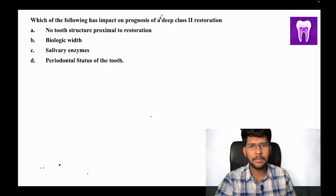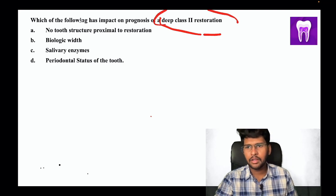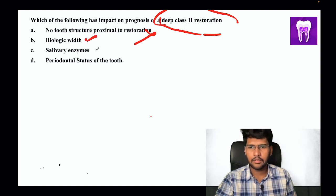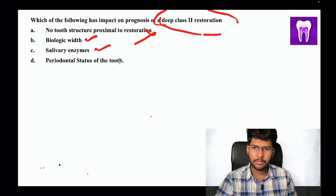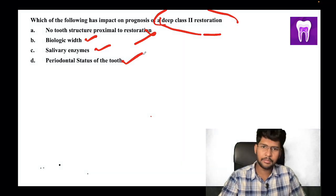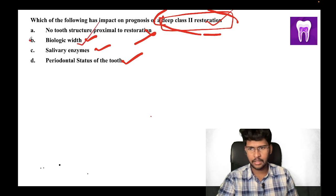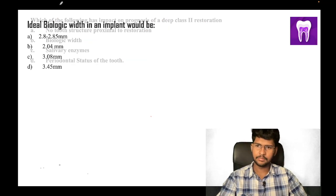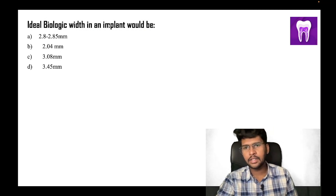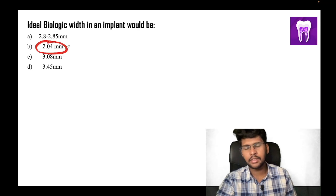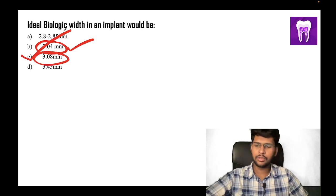Here is a question: which of the following has the most impact on prognosis of a deep class 2 restoration? Options include no tooth structure proximal to the restoration, biologic width, salivary enzymes, and periodontal stress. For a deep class 2 restoration, biologic width plays the most important role, so the answer is biologic width. Also, the ideal biologic width in a normal tooth structure is 2.04 mm, whereas in an implant it is 3.08 mm.